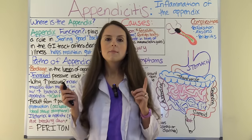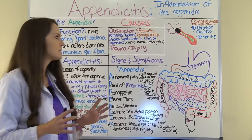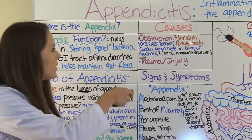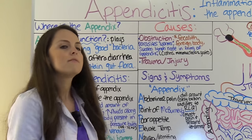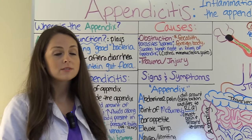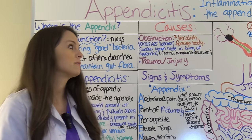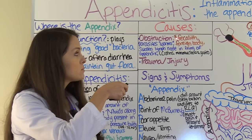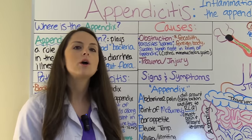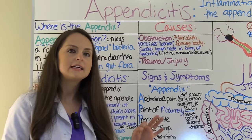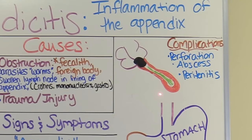Now let's talk about some causes of appendicitis. A big cause is obstruction — something gets inside the lumen of the appendix and causes problems. The most common cause is a fecalith, a fancy term for hardened stool that has literally calcified. It gets in there, as you can see in this drawing, and blocks the lumen of the appendix. Nothing can get out, causing increased pressure, and eventually the appendix can rupture.